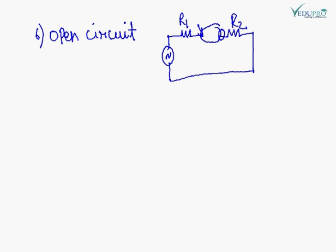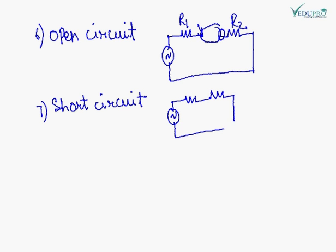Short circuit: when there is connection between components, we call it short circuit. For example, in the same circuit, suppose R1 is connected here and R2 is connected here. When they connect, we say that these two points are short.